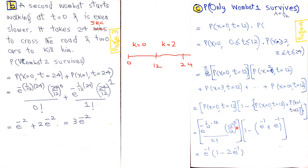Students can go through the details of these steps to reach the same answer. There is a small homework: part (d) of this problem — finding the probability that only wombat two survives and wombat one is killed — is left as an exercise. In the next lectures we will solve more problems related to Poisson processes. Thank you.